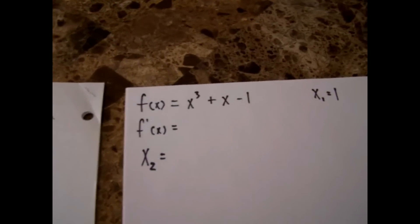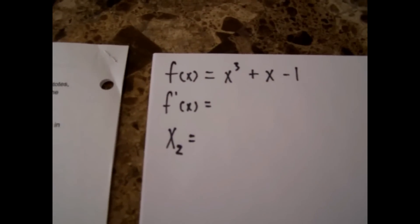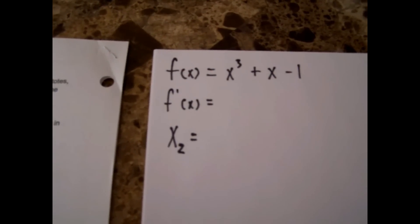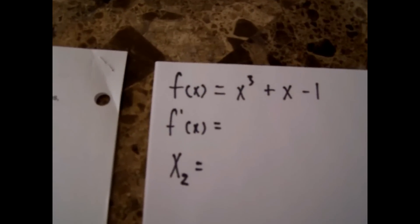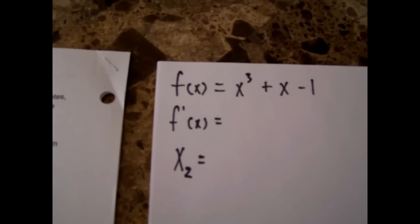For this question, you are asked to use Newton's method to approximate the zeros of the function f(x) = x³ + x - 1, with your initial guess being one.